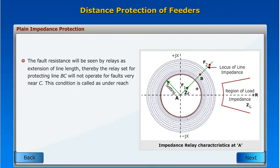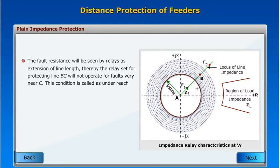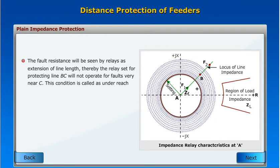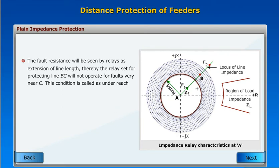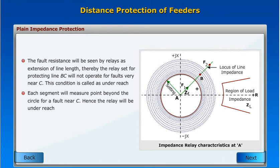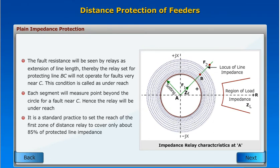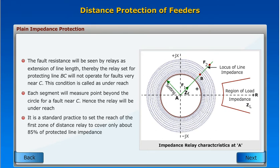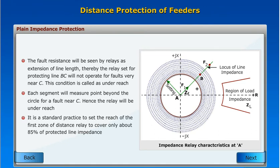The fault resistance will be seen by relays as an extension of line length, and thereby the relay set for protecting line BC will not operate for faults very near C. This condition is called under-reach. Each segment will measure a point beyond the circle for a fault near C, hence the relay will under-reach. It is standard practice to set the reach of the first zone of a distance relay to cover only about 85 percent of the protected line impedance.